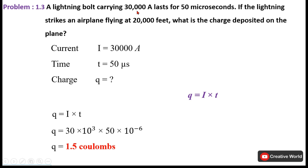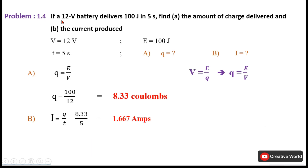Problem 1.3: A lightning bolt carrying 30,000 ampere lasts for 50 microseconds. If the lightning strikes an airplane flying at 220,000 feet, what is the charge deposited on the plane? Note that the height of the plane is given only to confuse — it is not used. Current = 30,000 A, time = 50 microseconds. Using Q = I × T, the answer is 1.5 coulombs.